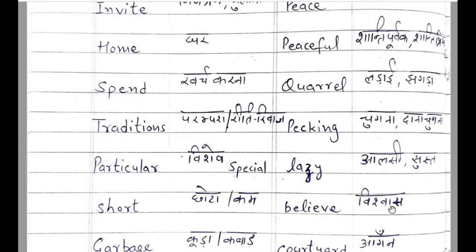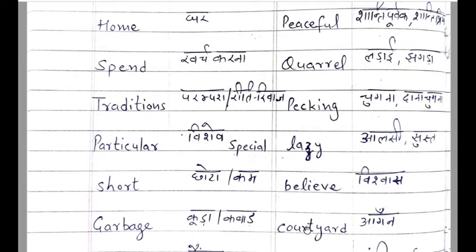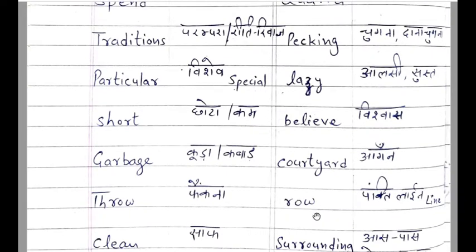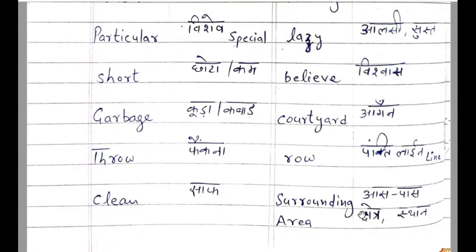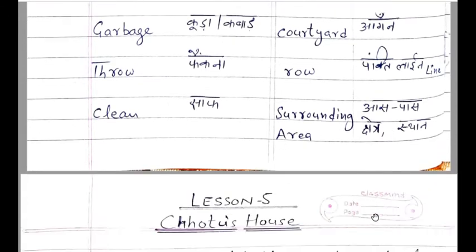Believe means विश्वास. Courtyard means आंगन. Row means पंक्ती, line. Surrounding means आसपास का — जो हमारे आसपास होता है, surroundings. Area means क्षेत्र, स्थान.